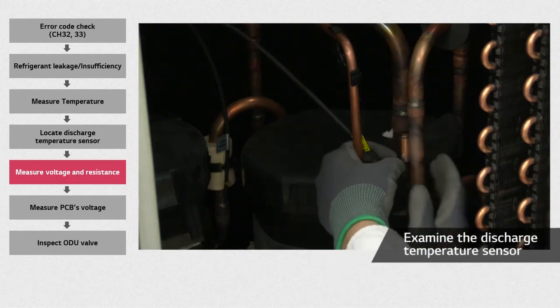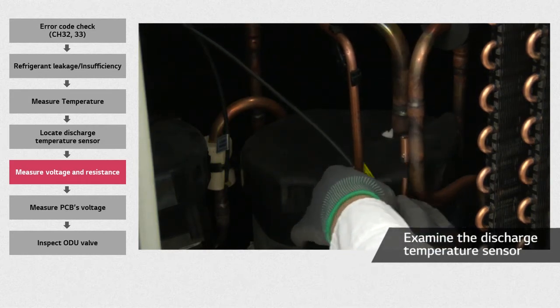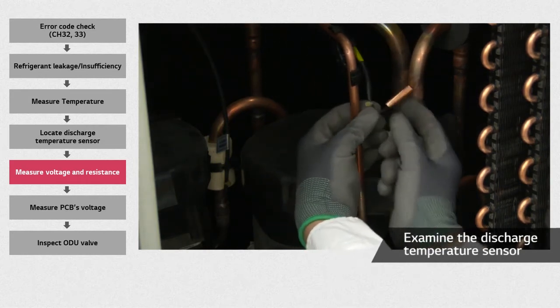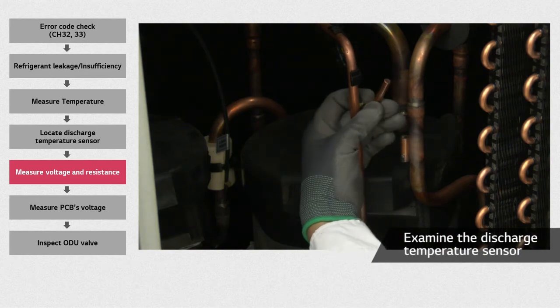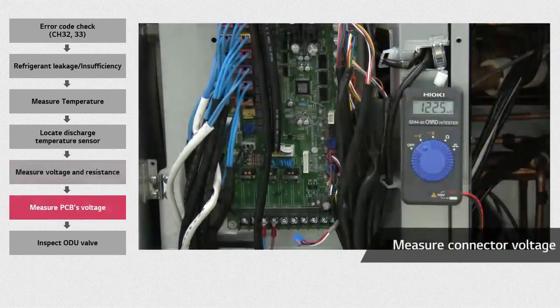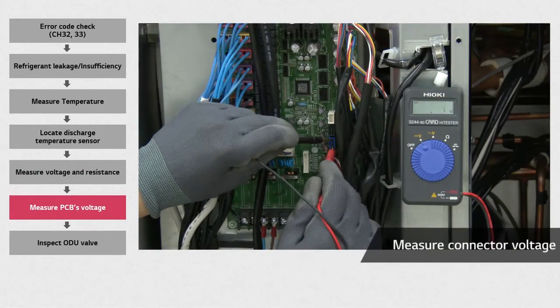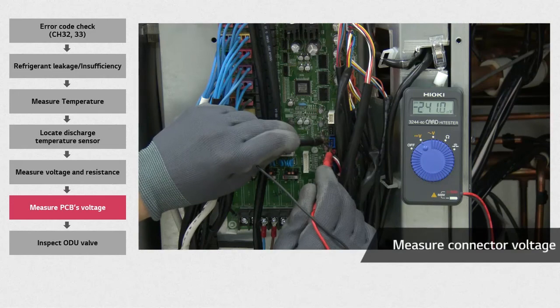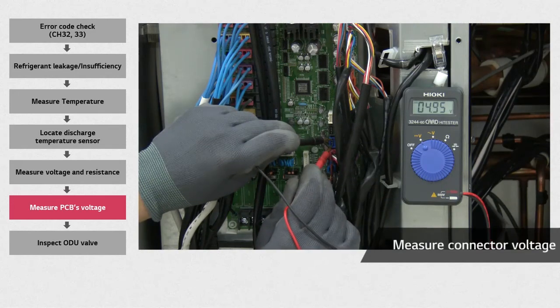To remove the broken sensor, unfasten the clip, remove the insulators and pull them out. Make sure the DC voltage from the external PCB blue connector is 5 volts.